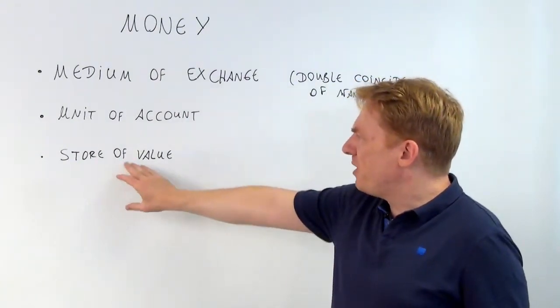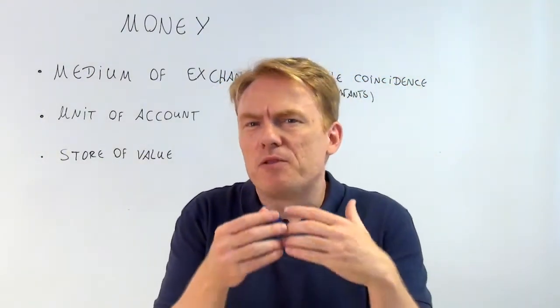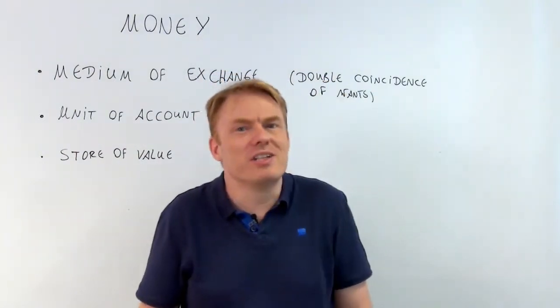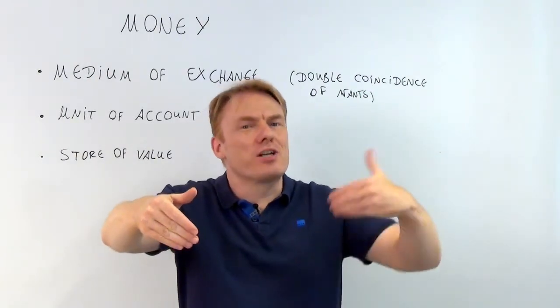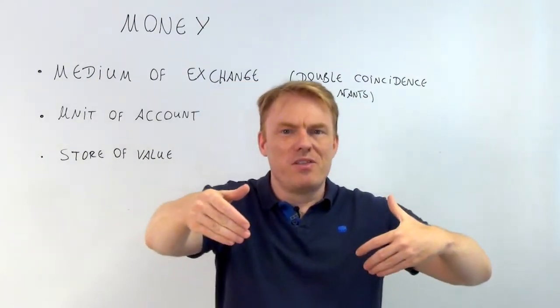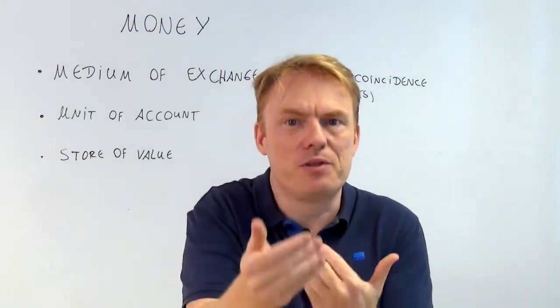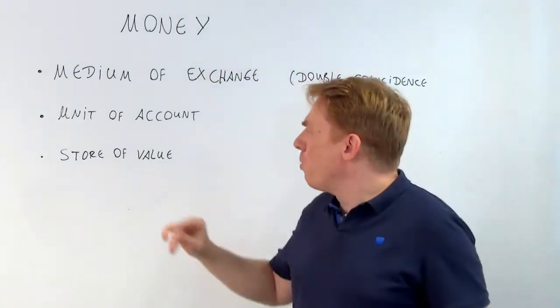Third and last property: store of value. With barter, if the cup of tea breaks you don't have a cup of tea any longer. If you want to get two glasses of water for one cup of tea and the cup of tea breaks, there is no possibility any longer for you to get the glass of water. That's the problem with store of value.